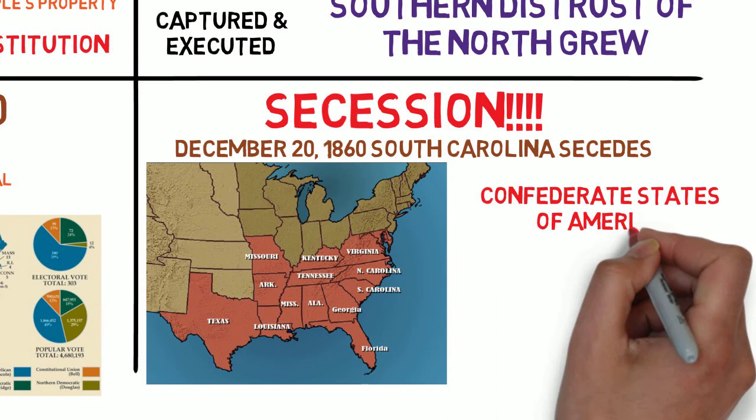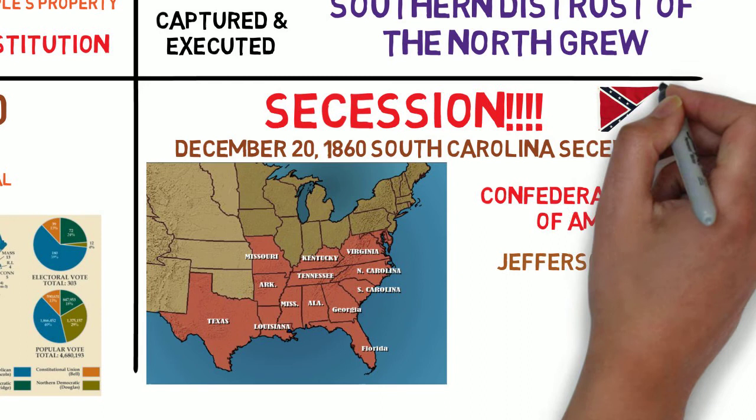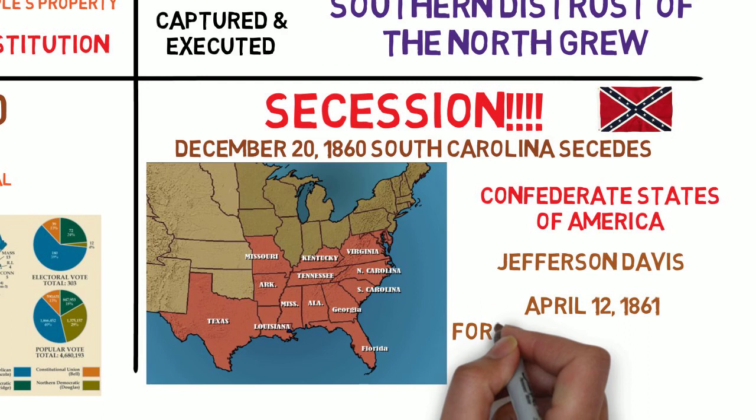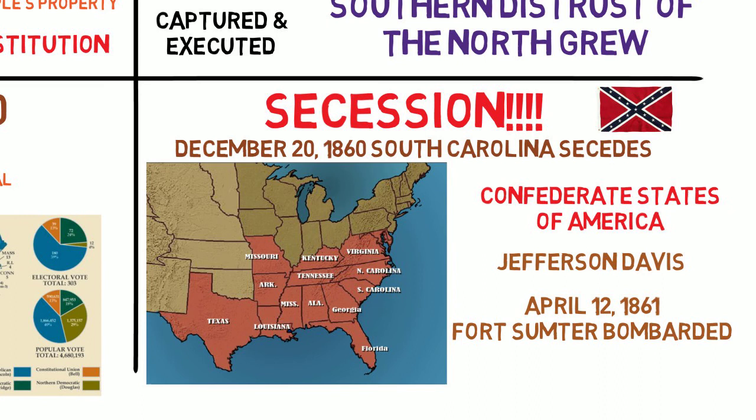After the secession of South Carolina, Abraham Lincoln decided to resupply the federal fort in Charleston Harbor in South Carolina, rather than surrender it to the Confederates. On April 12, 1861, Confederate forces bombarded the fort, and the Civil War had begun.